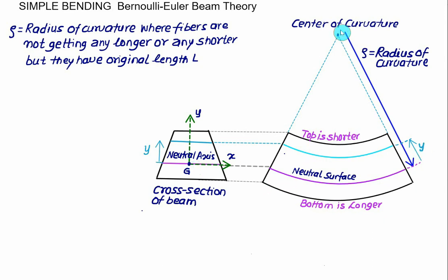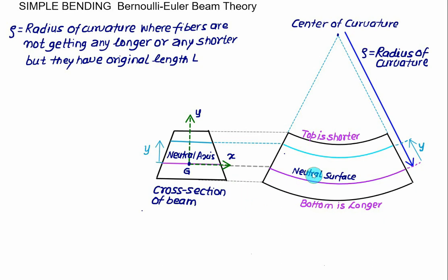The distance from the center of curvature to the neutral axis is rho, and the fiber is at distance Y from the neutral surface. Therefore, from the center of curvature, this fiber of interest is at a radius equal to rho minus Y. We are now ready to develop the equation for normal strain along the X direction.